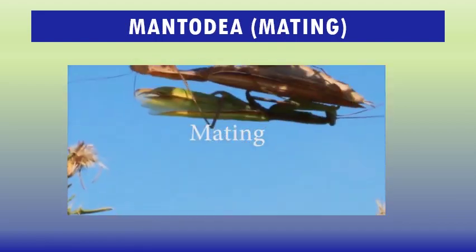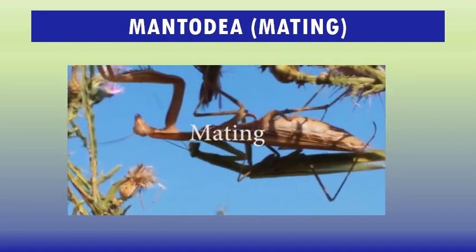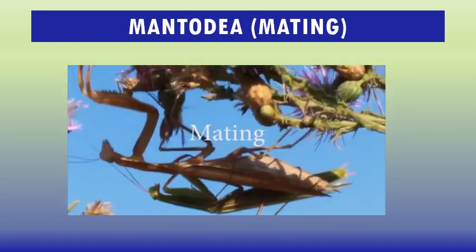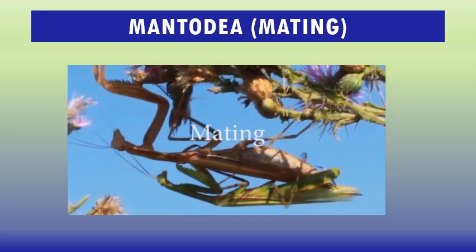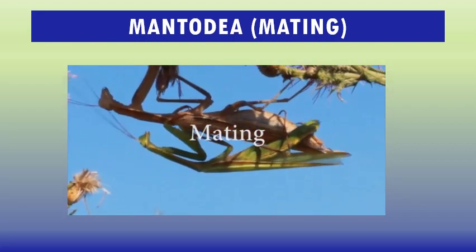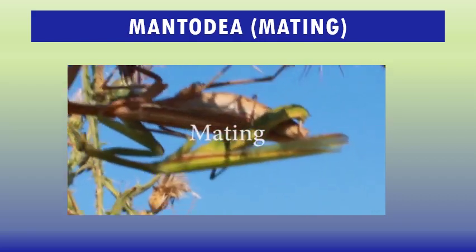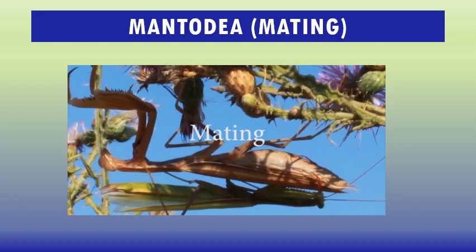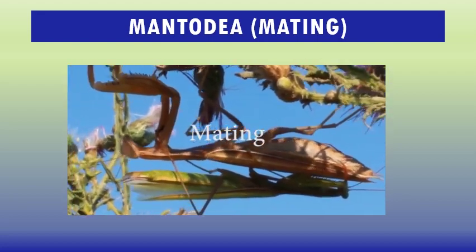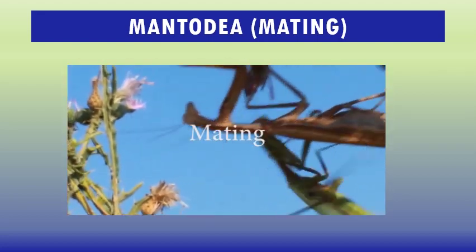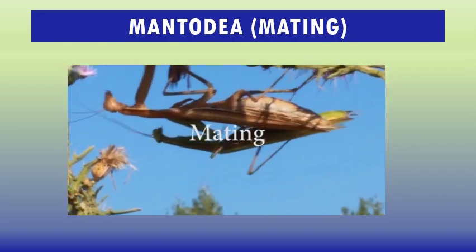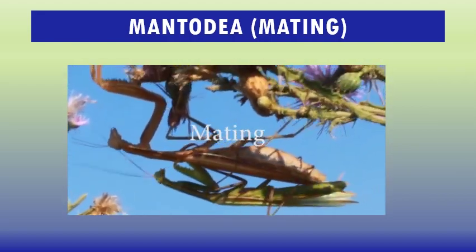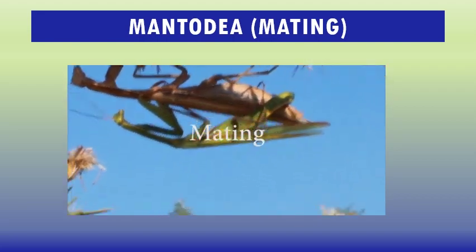The mating season in temperate climates typically takes place in autumn, while in tropical areas mating can occur at any time of the year. To mate, following courtship, the male usually leaps onto the female's back, clasping her thorax and wing bases with his forelegs. He then arcs his abdomen to deposit and store sperm in a special chamber near the tip of the female's abdomen.